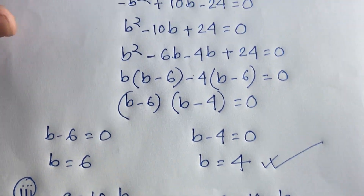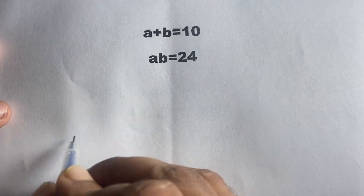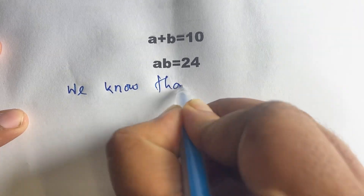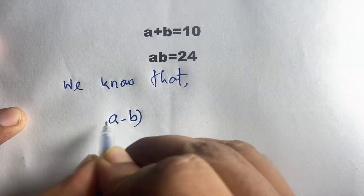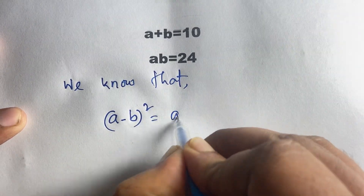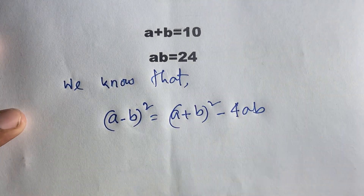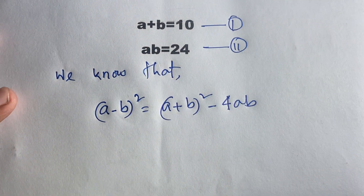Now I will solve this question using another method. Our question is a plus b is equal to 10 and ab is equal to 24. According to algebra rules, (a minus b) whole squared is equal to (a plus b) whole squared minus 4ab. This is our first equation and this is our second equation.